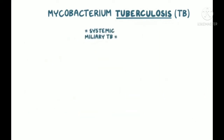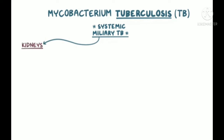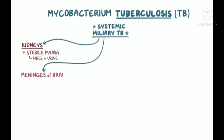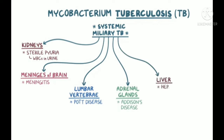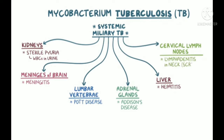When TB spreads to other tissues, it causes complications related to the organ affected. Kidneys are commonly affected, resulting in sterile pyuria, or high levels of white blood cells in the urine. It might also spread to the meninges of the brain, causing meningitis; the lumbar vertebrae, causing Pott's disease; the adrenal glands, causing Addison's disease; the liver, causing hepatitis; and the cervical lymph nodes, causing lymphadenitis in the neck, also known as scrofula.